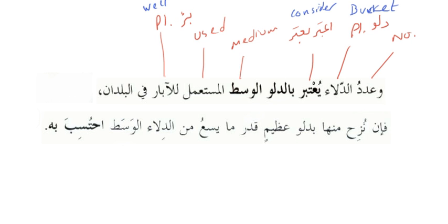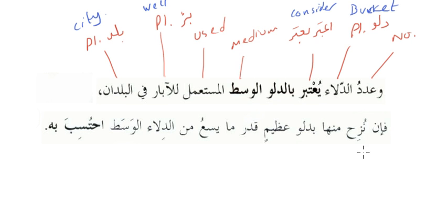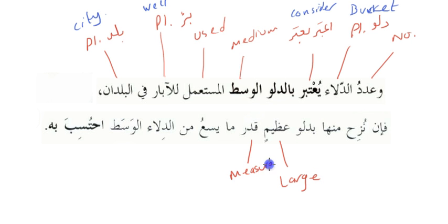في البلدان — البلدان is the plural of بلد which means city or place. نزحة has come before many times, meaning removed. عظيم is large. قدر is measure or amount. يسعو means to hold or contain, from الدلاء الوسطة.